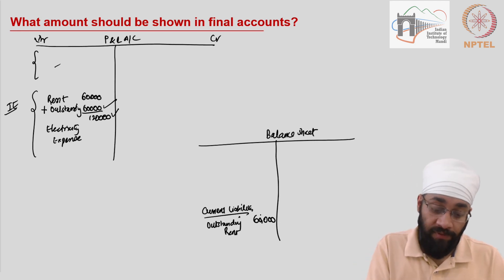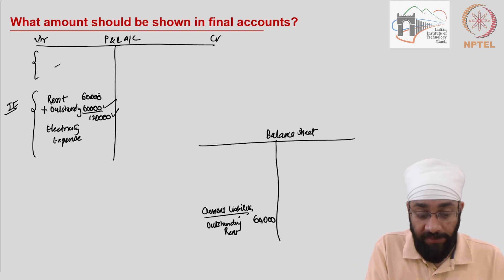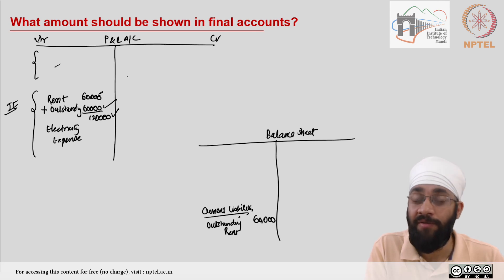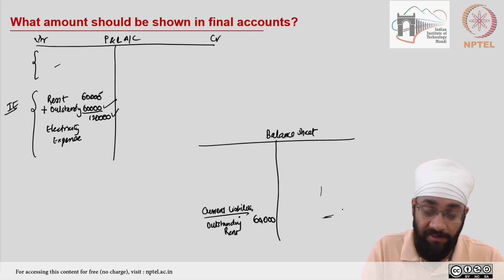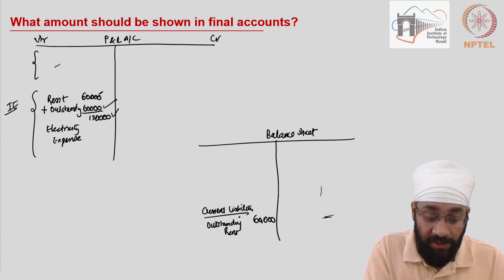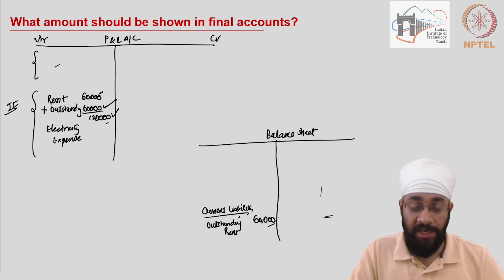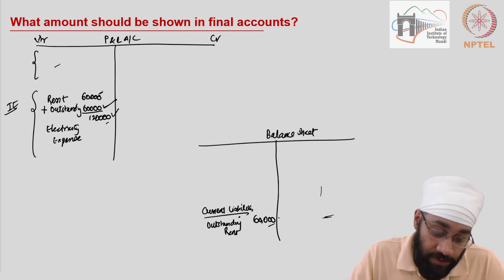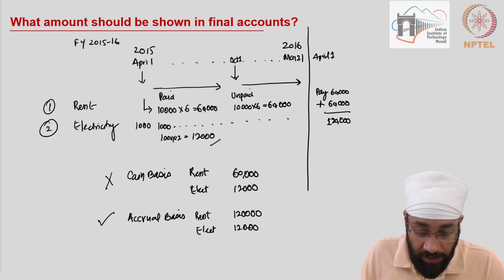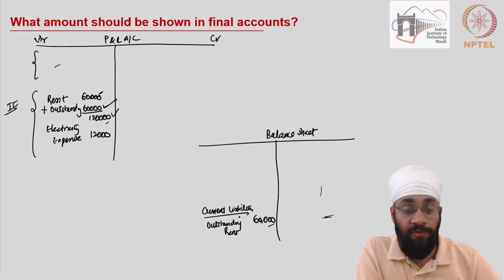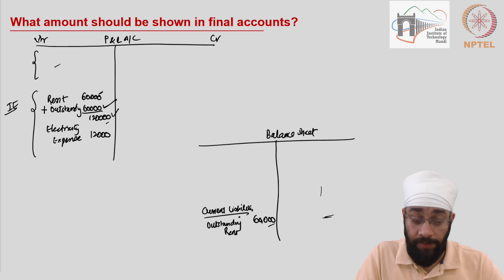See the double entry system — there are two effects happening. The rent which has been paid is shown in the income statement, and whatever has been paid will be deducted from the cash account on the debit side. The outstanding expenses of 60,000 are shown in the income statement as an expense and also as a liability, because you'll have to pay for it. Electricity expenses, on the other hand, are 12,000 — shown as they are, all paid. Nothing goes to the balance sheet.